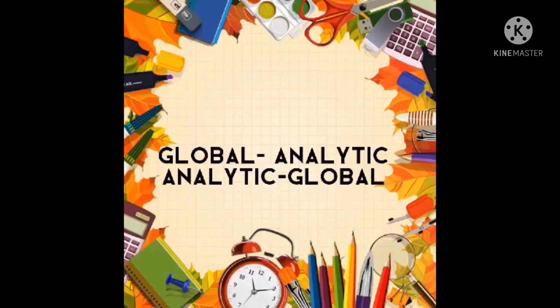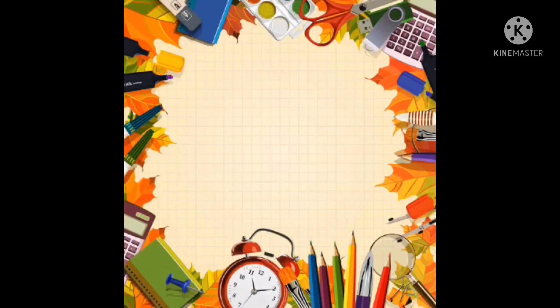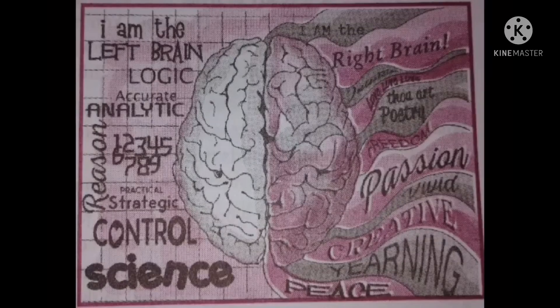Next is the Global-Analytic continuum. The left brain is the analytic part of the brain — for example, when you're solving math problems, the left side of your brain is working. The right brain is the creative part of the brain — for example, if you're doing arts, the right side of your brain is working.